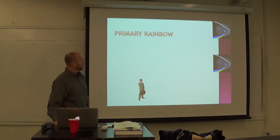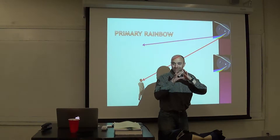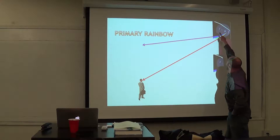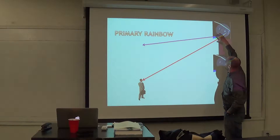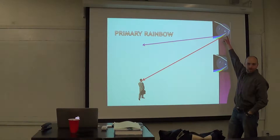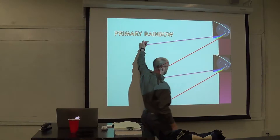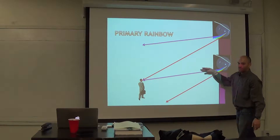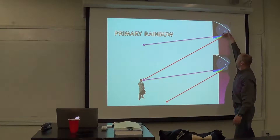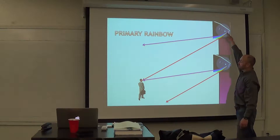The light is hitting you in the back of the head, but it's also coming into each of these raindrops that are spheres in the sky. When it comes into one, it reflects and does this dispersion thing. Up there you see red from that upper raindrop. From this raindrop, it's going to do its dispersion thing, and you're going to see the purple from this raindrop. All the raindrops in between show you the other colors. This is how you see a rainbow.